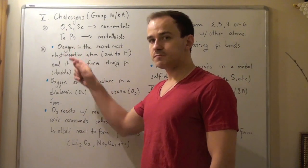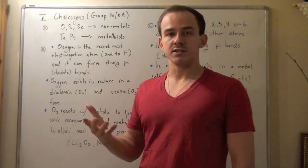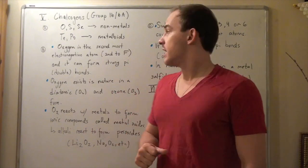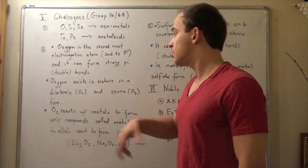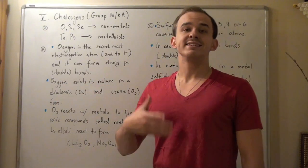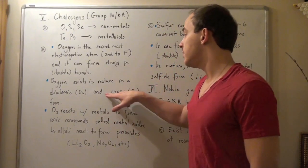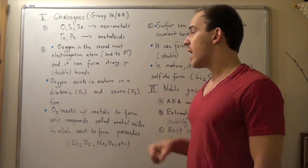Oxygen, like carbon, also forms strong bonds, strong double bonds. Oxygen exists in nature in a diatomic or triatomic form, namely O2 oxygen or ozone.